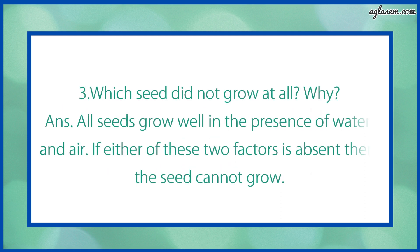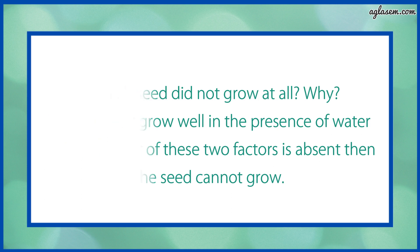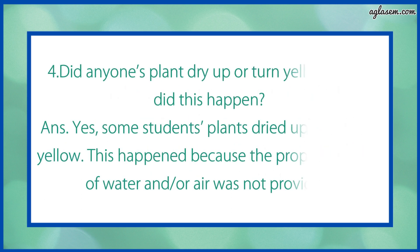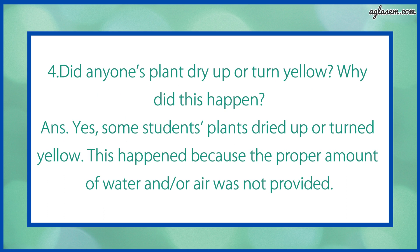Question number 3 says: which seeds did not grow at all and why? Answer: all seeds grow well in the presence of water and air. If either of these two factors is absent, then the seed cannot grow. Question number 4 says: did anyone's plant dry up or turn yellow? Why did this happen? Answer: yes, some students' plants dried up or turned yellow. This happened because the proper amount of water and air was not provided.